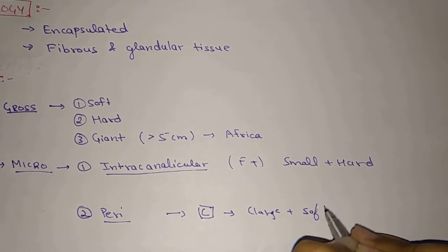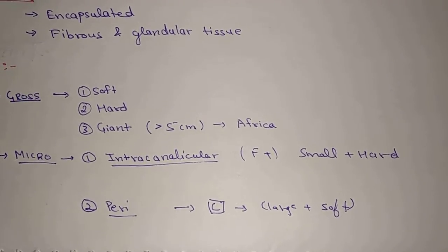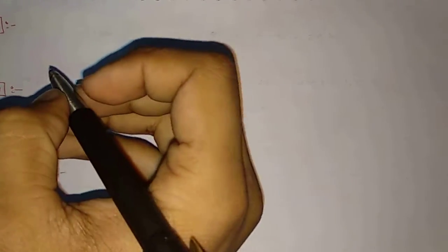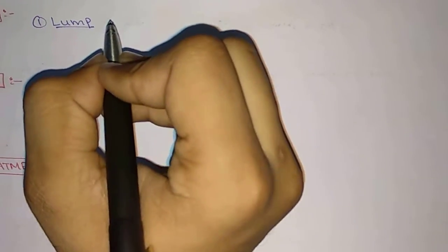Coming to the clinical features, the only complaint of the patient is lump in the breast. The lump is painless, smooth, non-tender, well localized, and freely mobile. These are the characteristics of this lump. Axillary lymph nodes are not present because it is a benign condition.